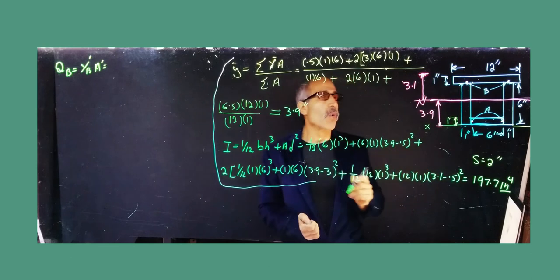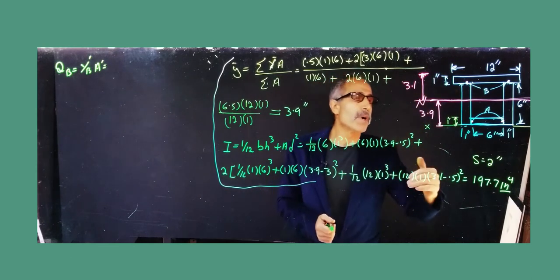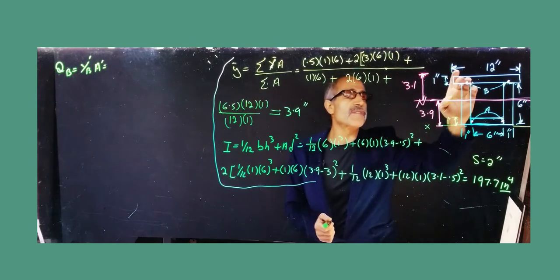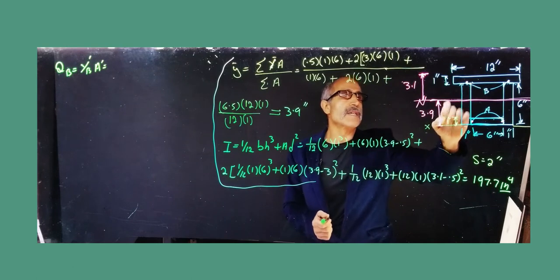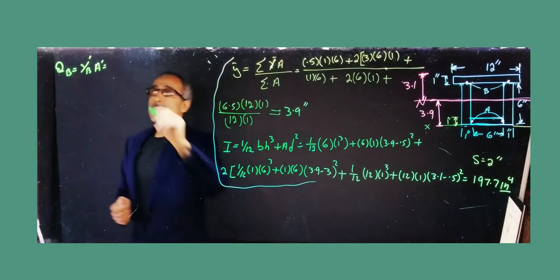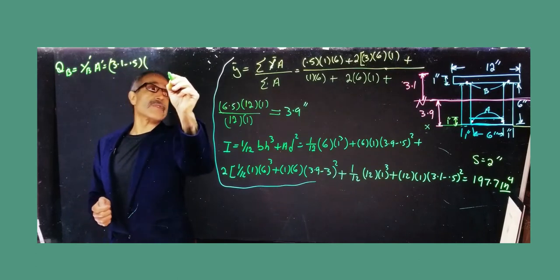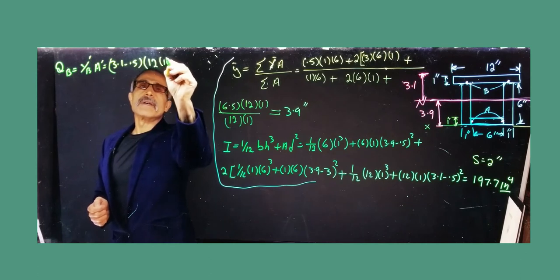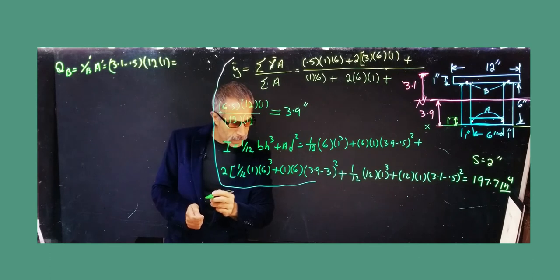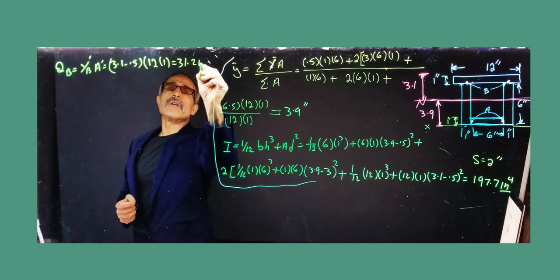For Q_b, the area above the nail location is the top board (12 × 1). The distance y'_b from the center of that top board to the neutral axis is 3.1 minus 0.5, giving 2.6 inches. So Q_b = 2.6 × (12 × 1) = 31.2 in³.